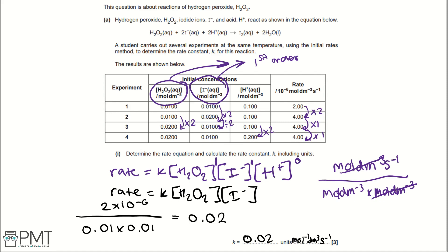For this question, you get a mark for the correct rate equation, a mark for the correct K value, and a mark for the correct units.